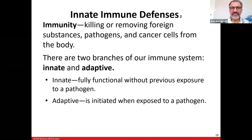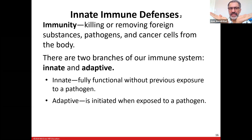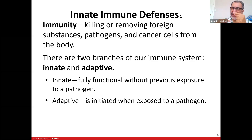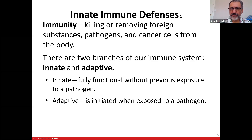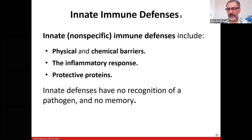In innate immune defense, we have two types of immunity: innate and adaptive. The innate is pretty much what you were born with — fully functional without previous exposure to pathogens. Adaptive immunity develops as you age and are exposed to pathogens such as bacteria, viruses, and parasites.